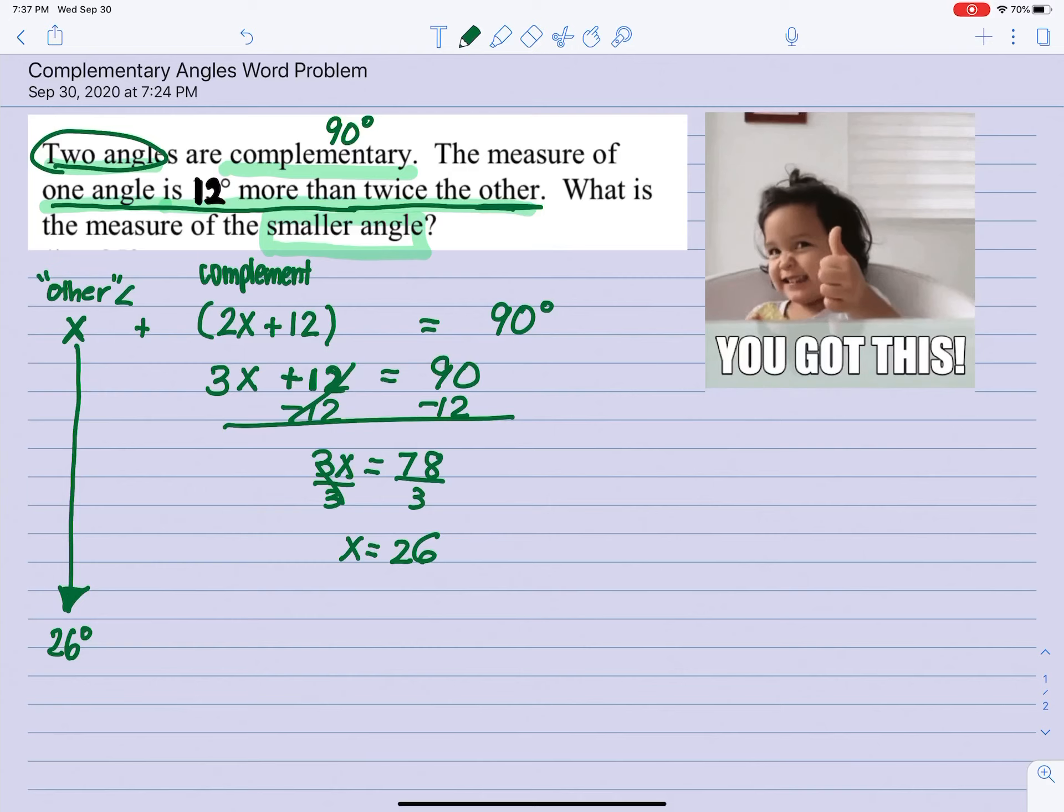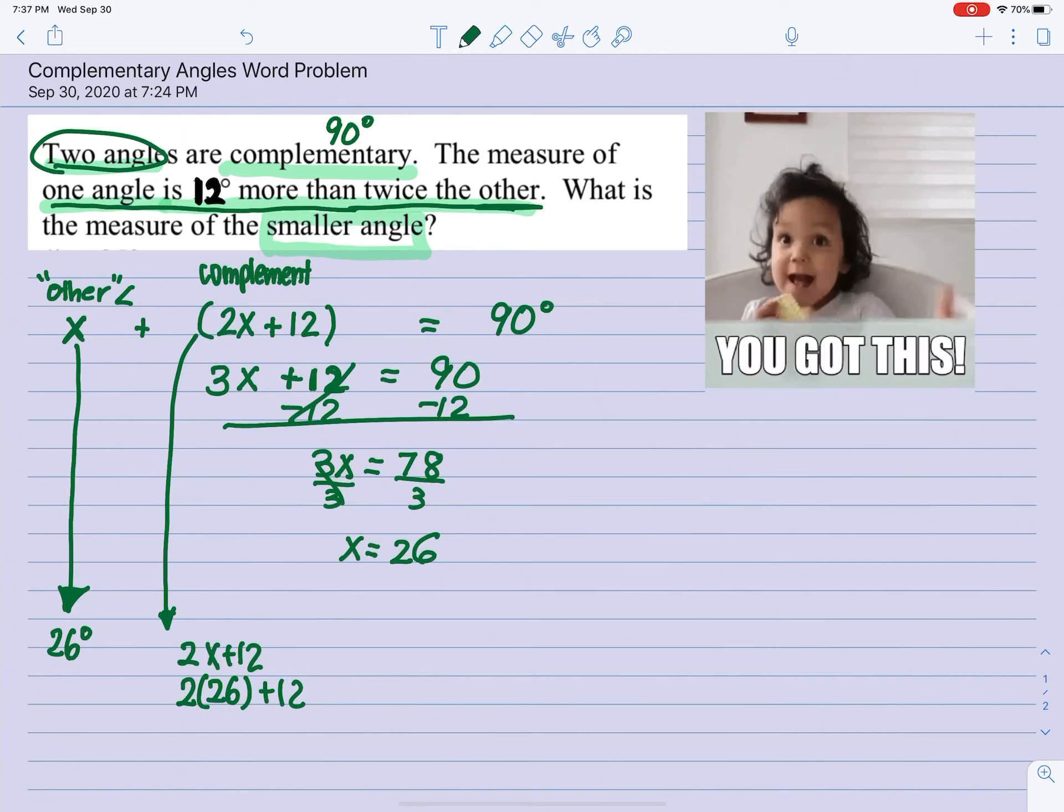And if I wanted to find the complement—so complement means the second one—we just plug it in. So it's 2x plus 12, but instead of the x we're going to substitute 26. And so 2 times 26, that's 52 plus 12, is 64 degrees.